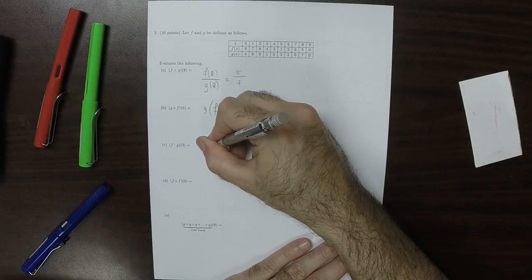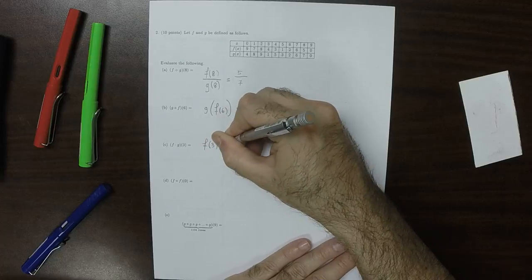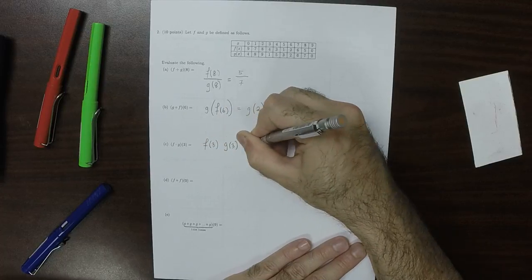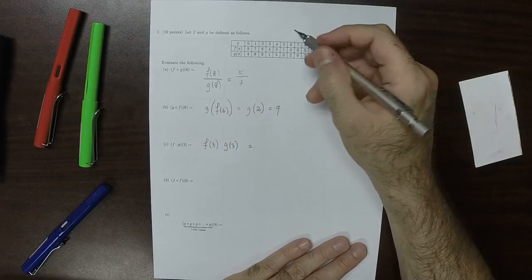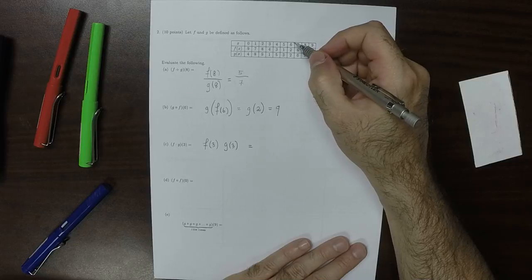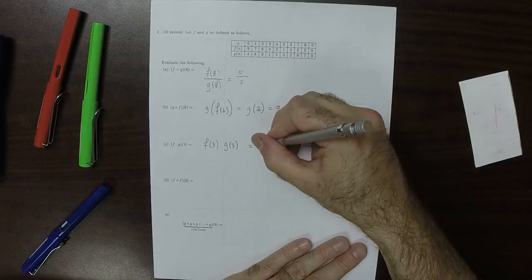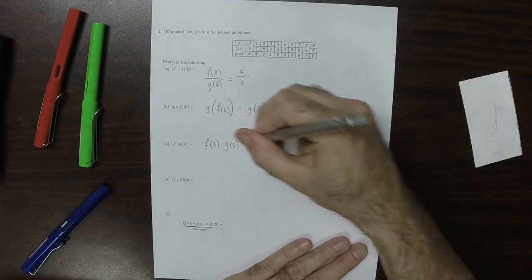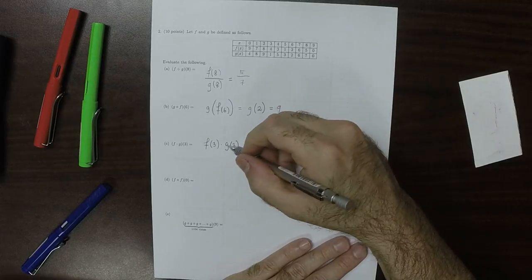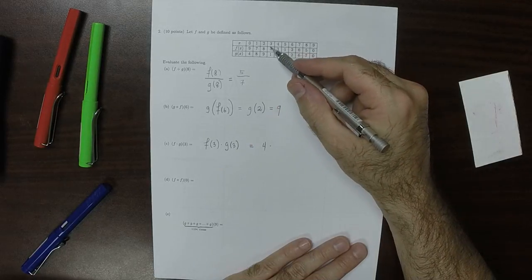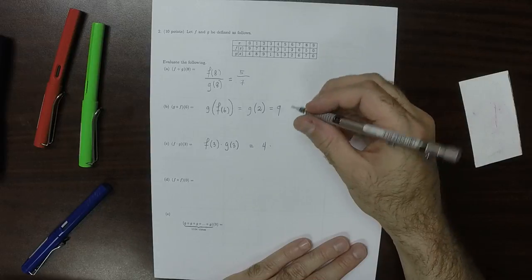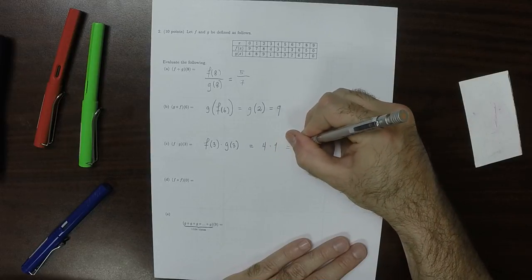This is by definition F of 3 multiplied by G of 3. So that is, take F, plug in 3, you get 4. Take G, plug in 3, you get 1. So the answer is 4.